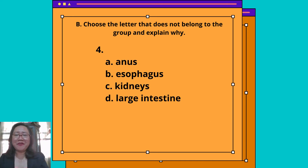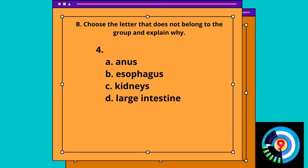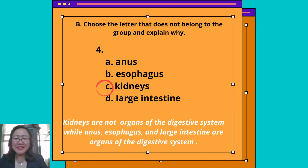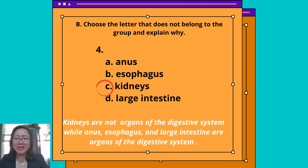Number 4 — Answer: Letter C, Kidneys. Kidneys are not organs of the digestive system, while the anus, esophagus, and large intestine are organs of the digestive system.